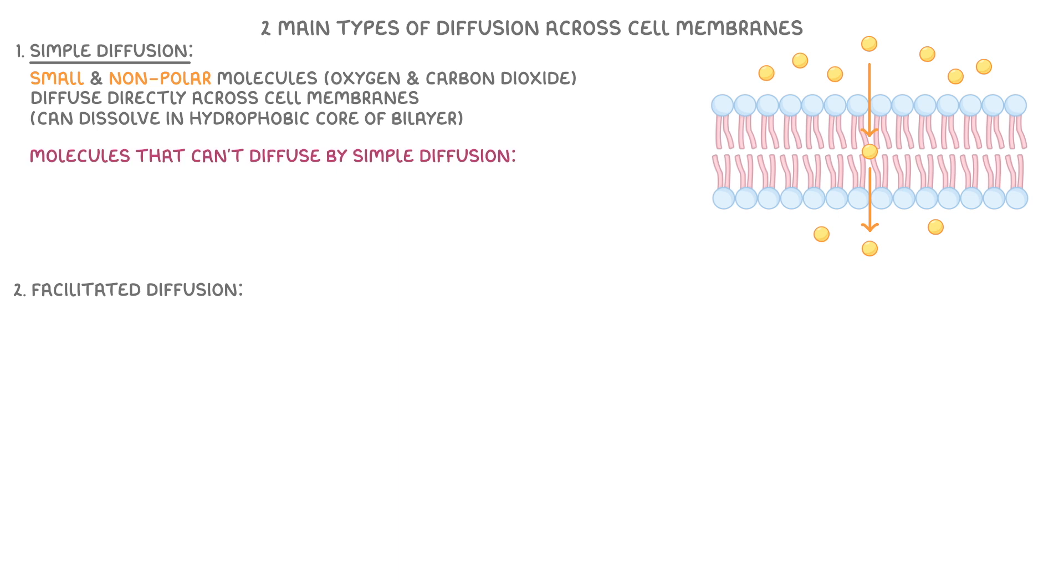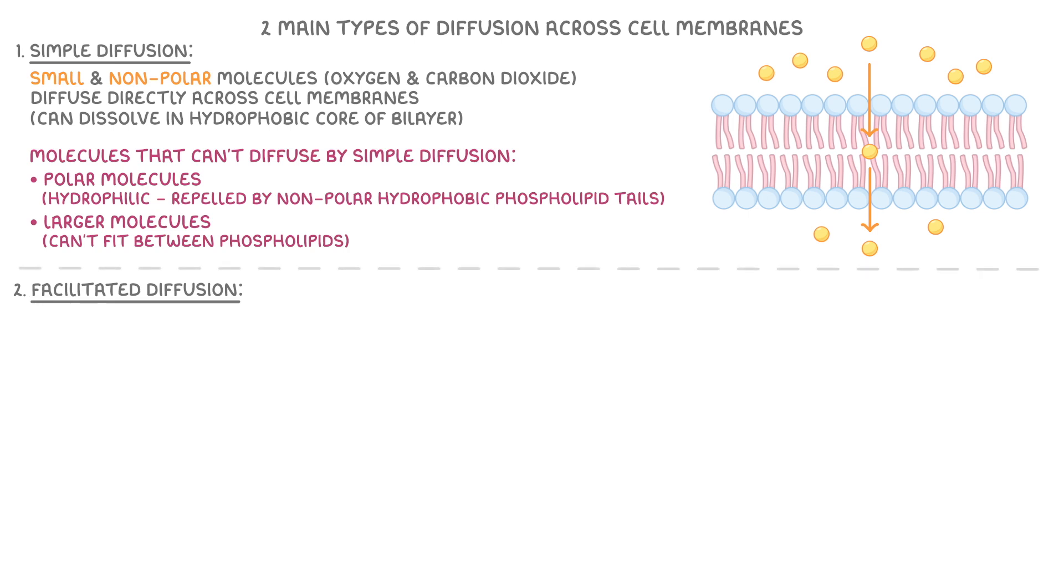There are some molecules that can't diffuse by simple diffusion through a cell membrane, though. Some examples here are polar molecules, which are hydrophilic, so are repelled by the non-polar hydrophobic phospholipid tails, and then also larger molecules because they can't fit between the phospholipids. However, molecules like these can sometimes use facilitated diffusion instead.